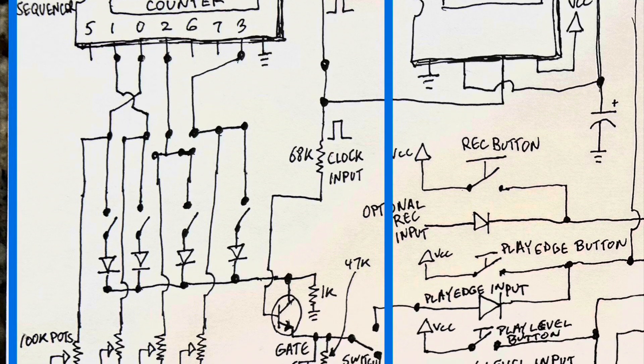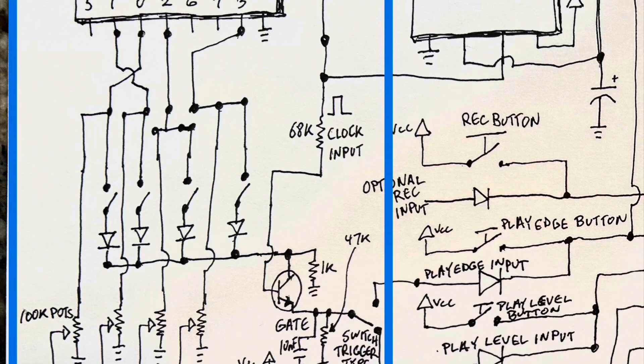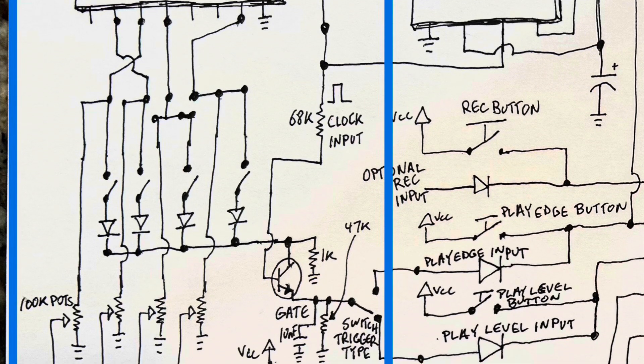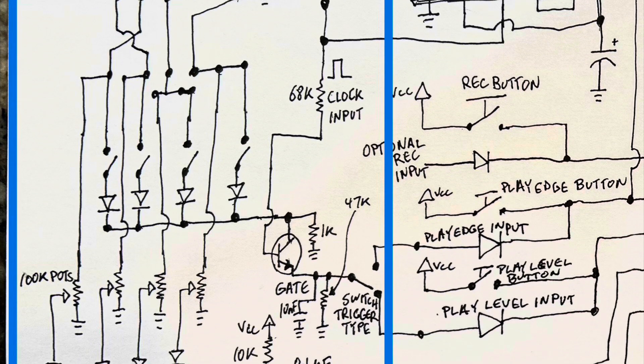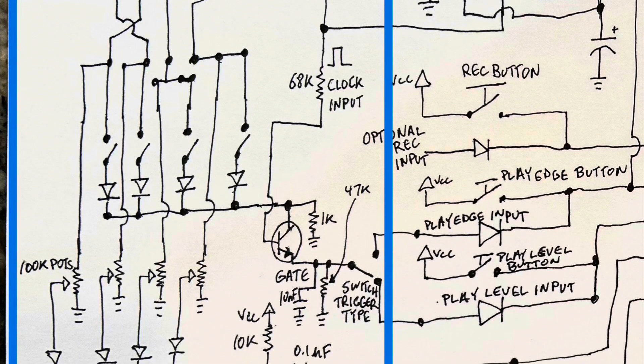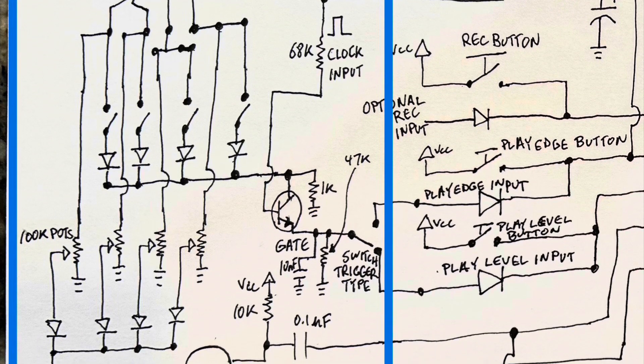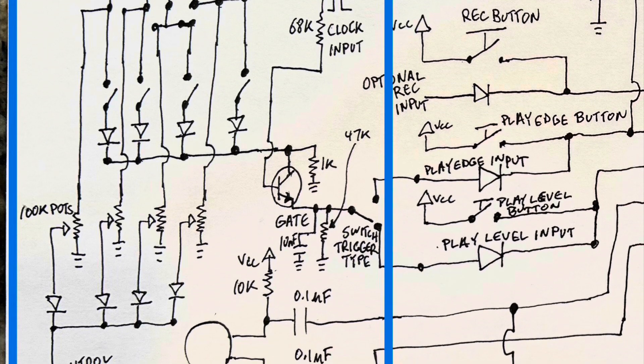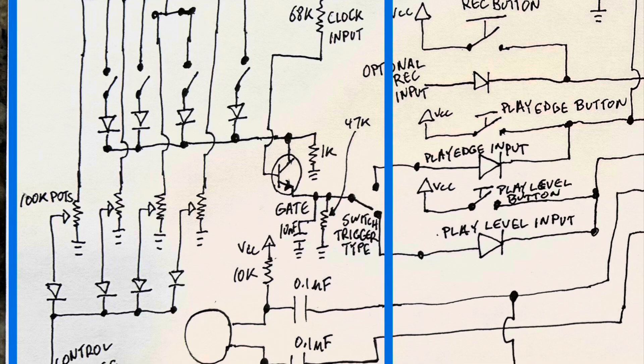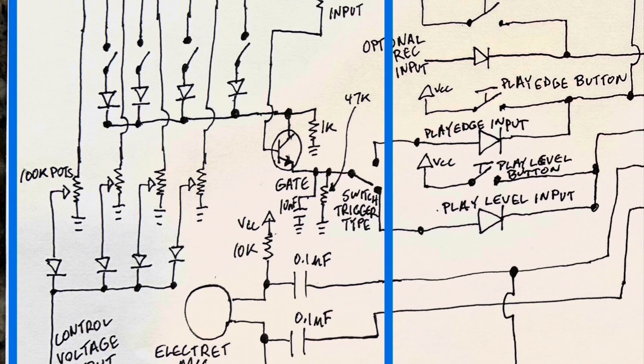going in getting split into two separate signals. One is a gate signal, which is controlled by a switch. And the output of those switches are all going to diodes connected together. And I have that going into a transistor, which is gated by the clock signal. And that's going in to trigger either the play edge or the play level circuits.